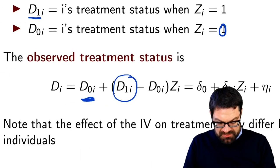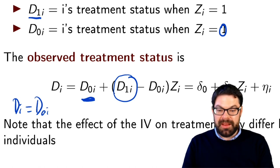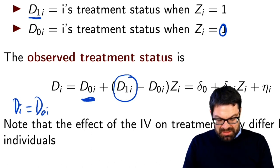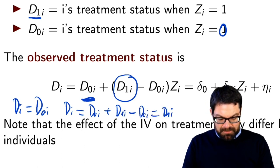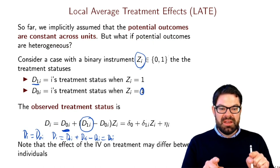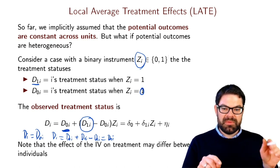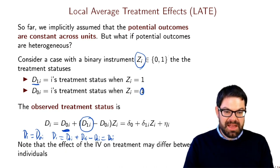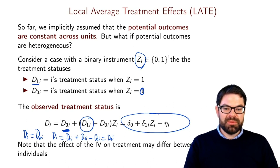Without having received the encouragement, a person's treatment status is D0, whereas if the instrument is one instead of zero, their treatment status switches from D0 to D1. If you plug Z equals zero into the switching equation, the treatment status is D0. We can turn this switching equation into a regression equation by simply adding a mean-zero error term.